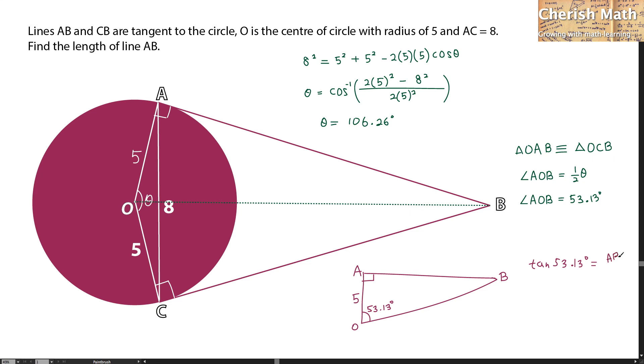...length of AB divided by 5. So now, the value of AB is found by using 5 multiplied by tangent 53.13 degrees. And that result is 6.67 units as the answer.